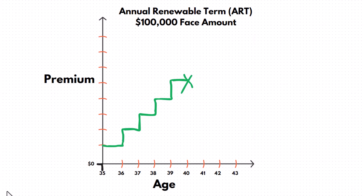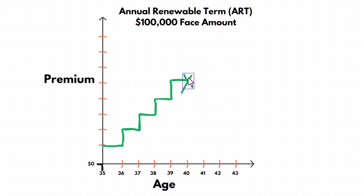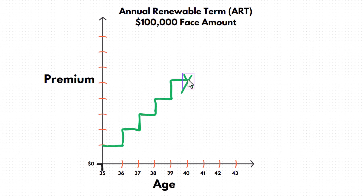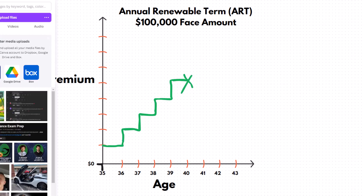He doesn't have to go through underwriting to prove evidence of insurability each time he renews. And he decides at age 40 he's not going to renew anymore.